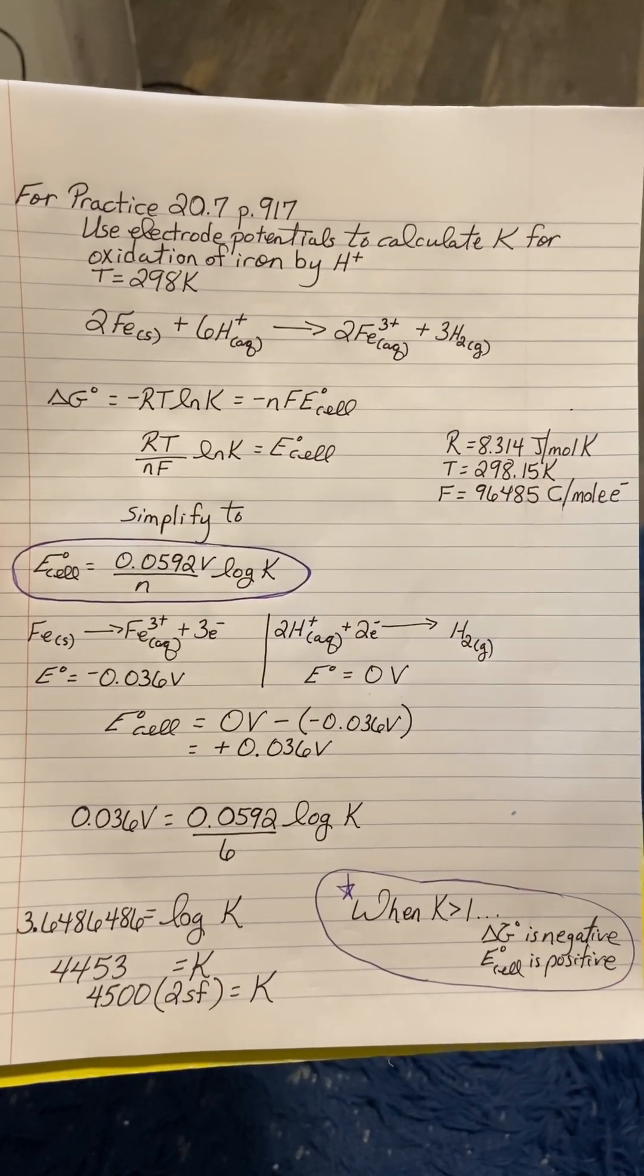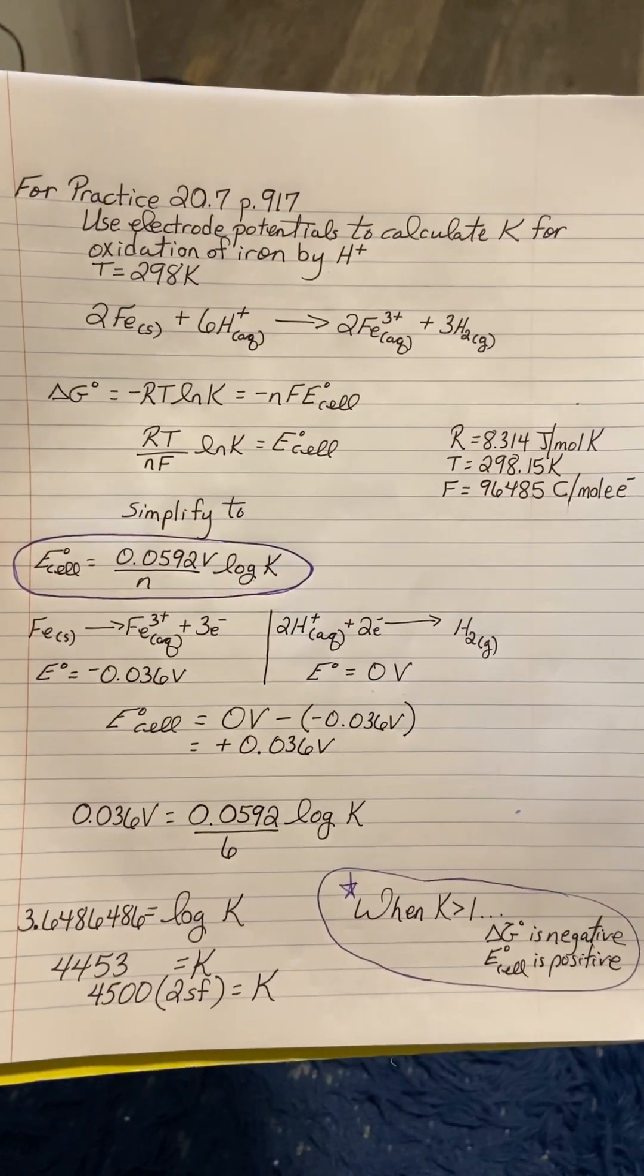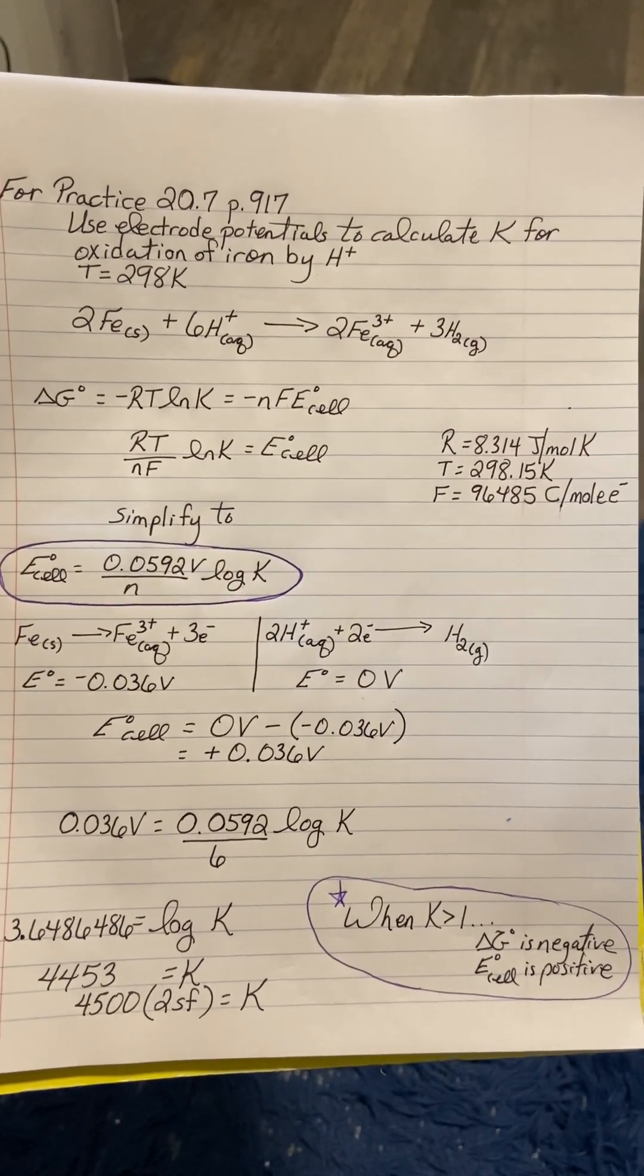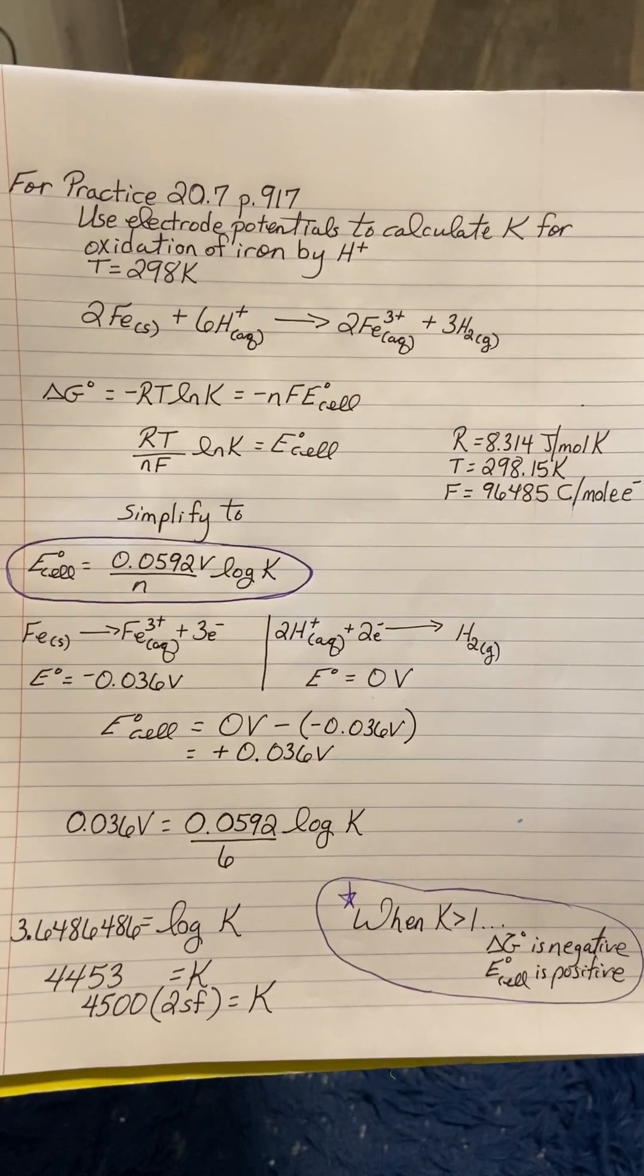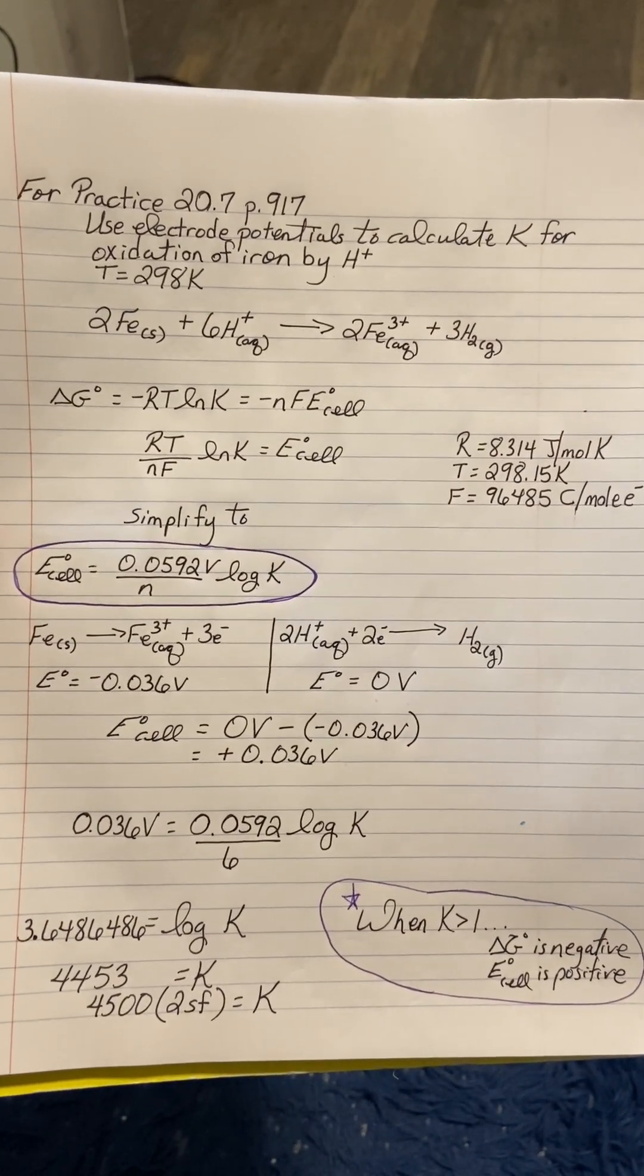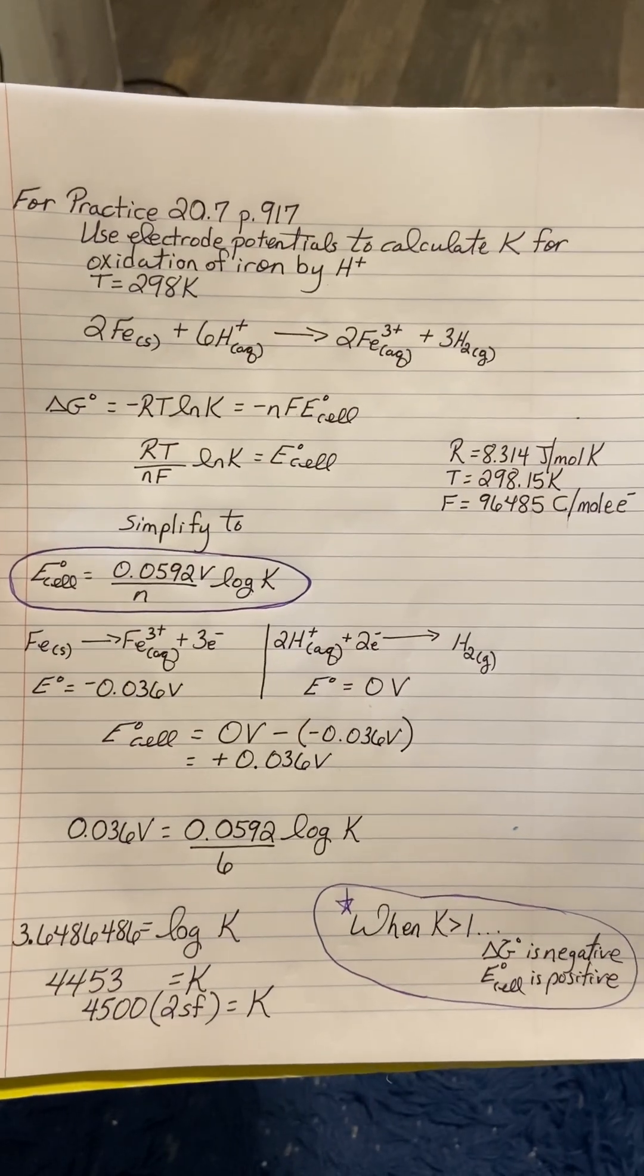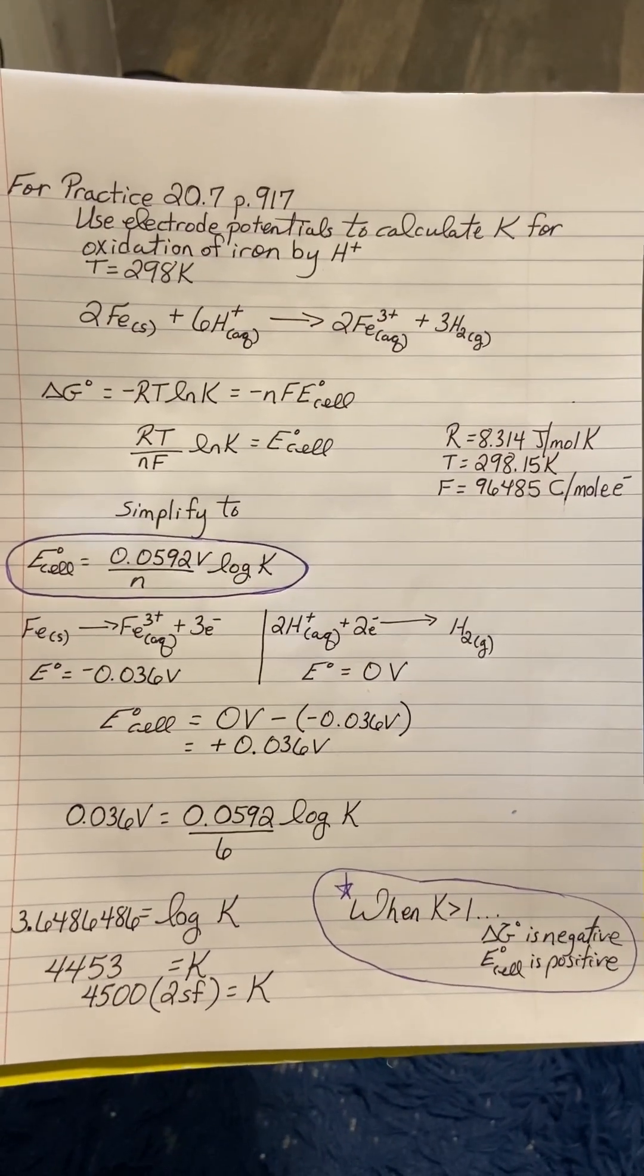First thing we do, we can take delta G equals negative RTlnK and that also equals negative nFE_cell. Let's set those two equal to one another because both of them solve for Gibbs free energy, then rearrange so that we can isolate and solve for E_cell.